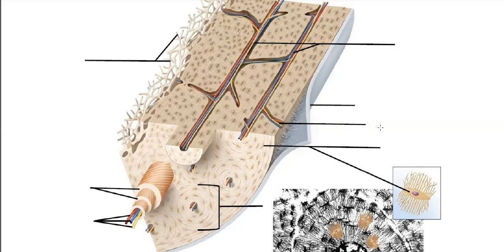Pulling out one osteon, we can see the layers and we see cartilage here. In the center of the osteon, running through the central canal, we have blood vessels — the red and the blue — and a nerve, shown in yellow.